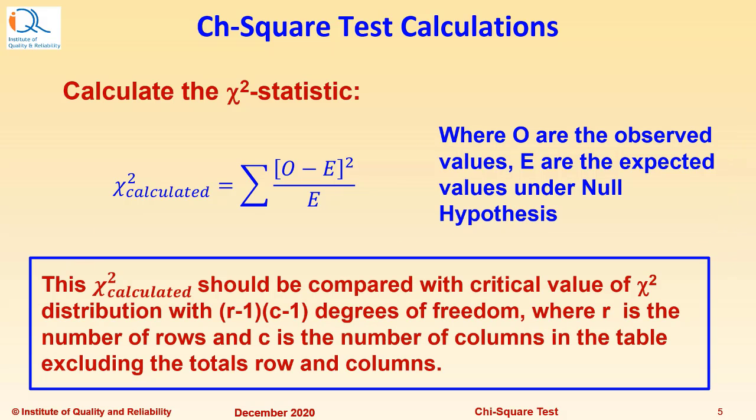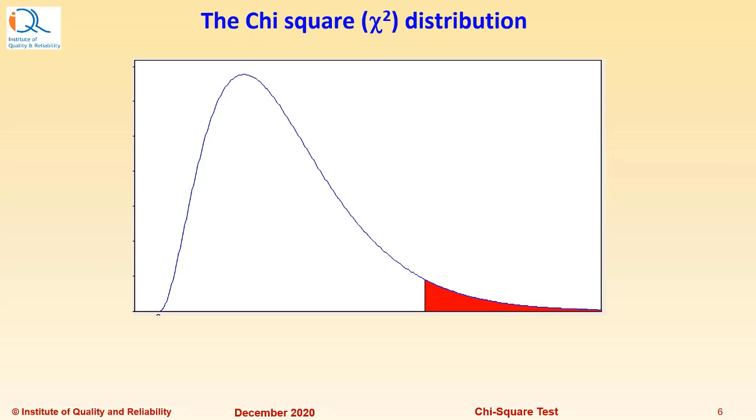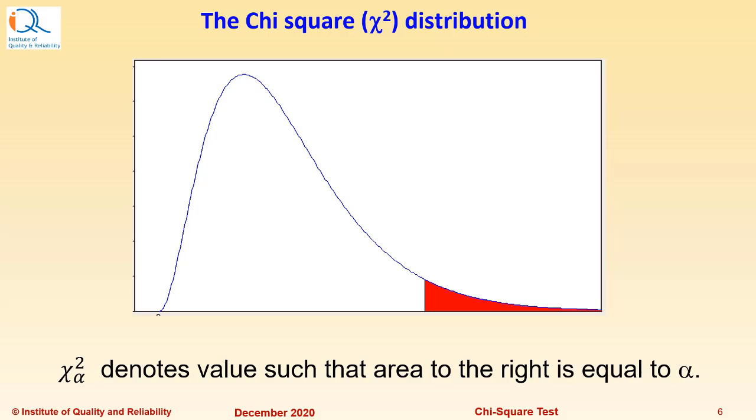This Chi-square calculated should be compared with critical value of Chi-square distribution with (r-1)(c-1) degrees of freedom, where r is the number of rows and c is the number of columns in the table, excluding the totals row and column. We have already explained about Chi-square distribution in our previous video. Chi-square alpha denotes value such that the area to the right is equal to alpha.